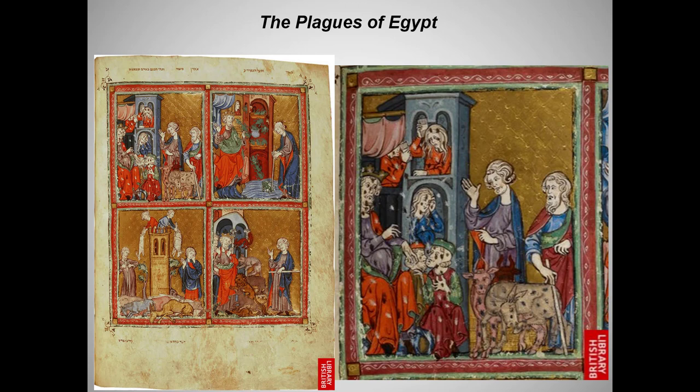A Haggadah is a kind of storybook used during Passover. Why could it contain human images — something that was as strongly prohibited in Judaism as in Islam? As the assigned essay explained, there was a Haggadah loophole: the Haggadah was considered educational rather than religious. Here you see the plagues descending on Egypt when the Pharaoh refuses to let the Jews leave. The enlarged panel shows a plague of lice. The other panels show the plague of frogs, disease, and wild animals.